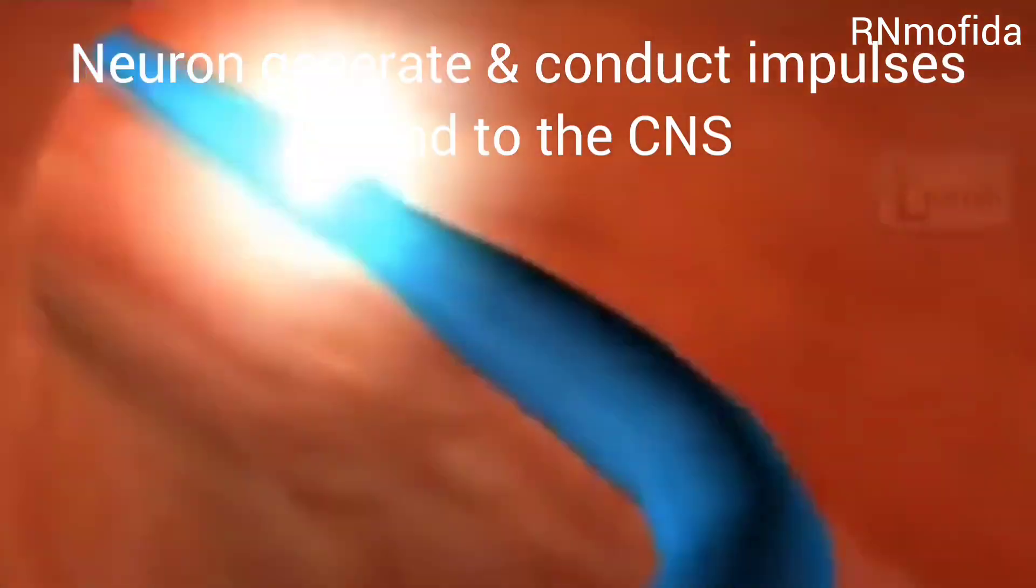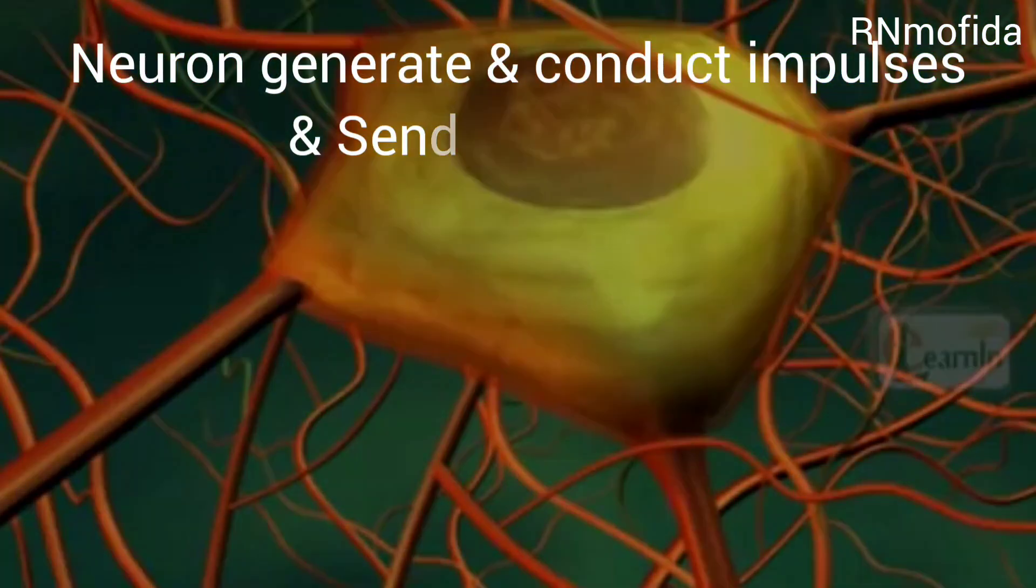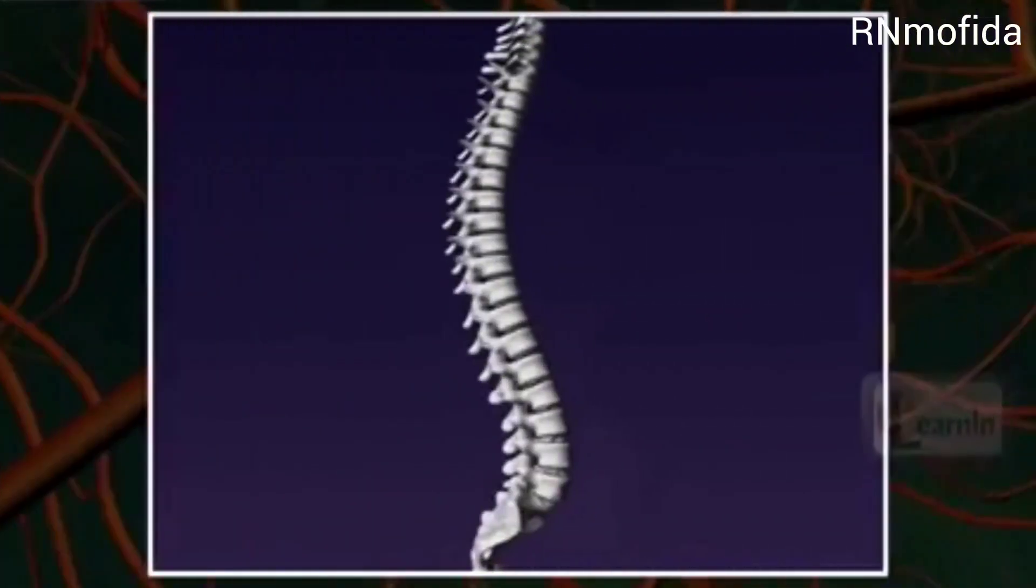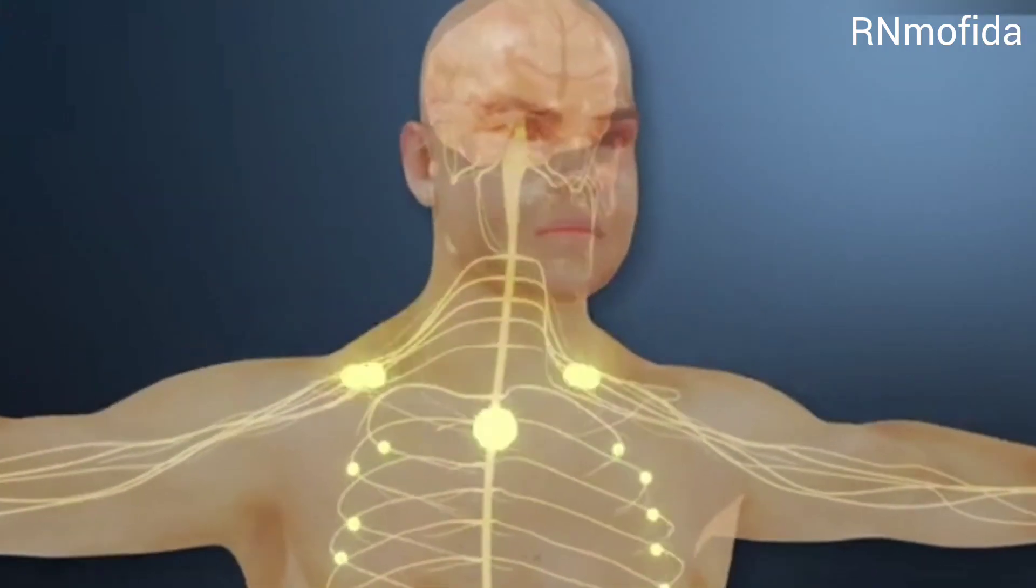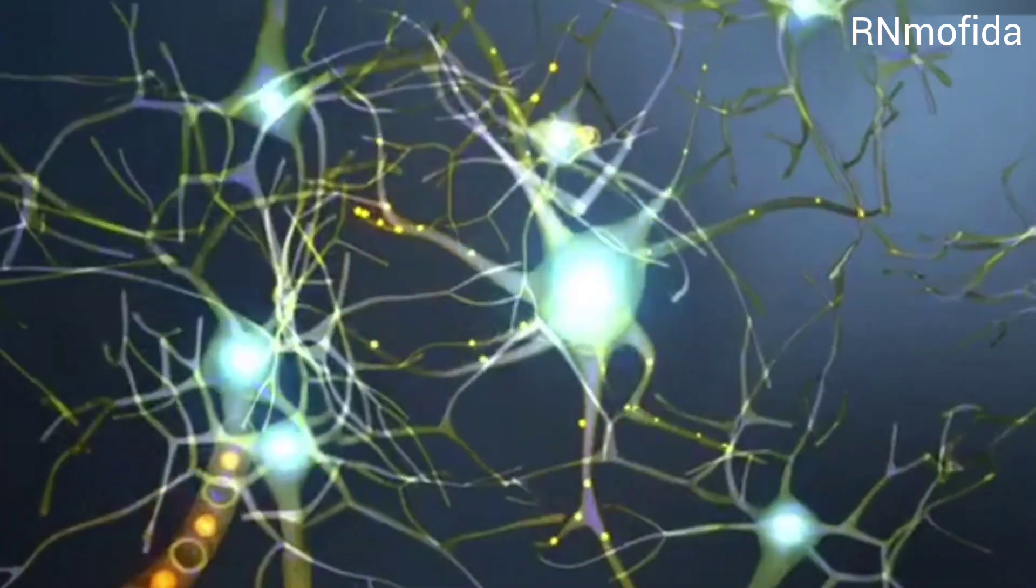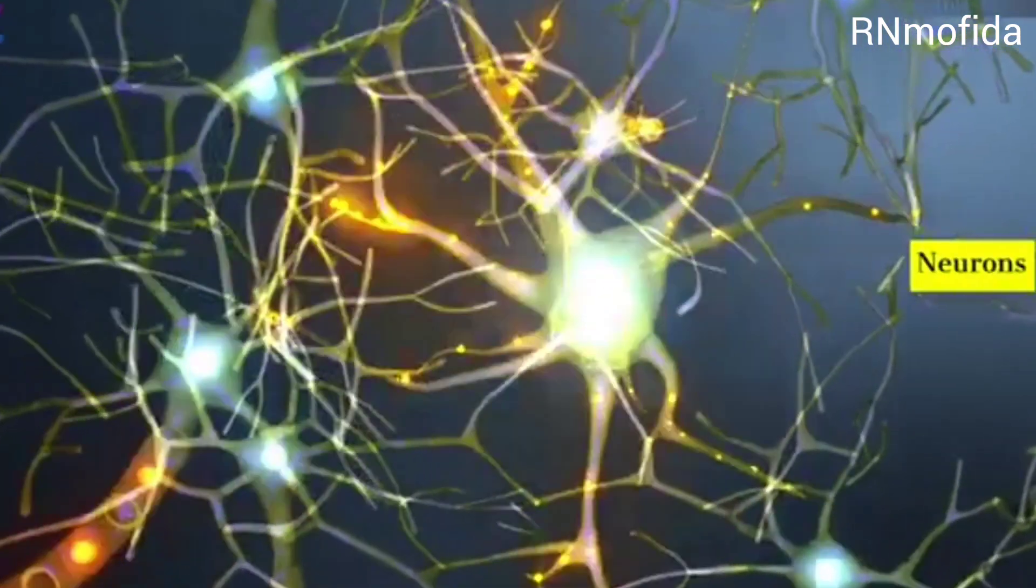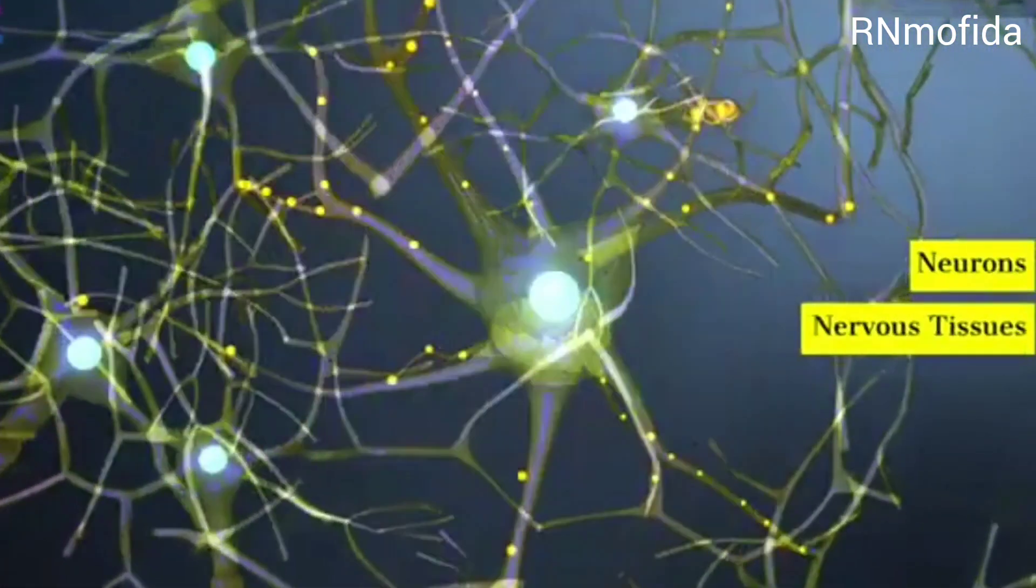Neurons are defined as the structural and functional unit of the nervous system. Neurons generate and conduct impulses and send impulses to the central nervous system. The entire nervous system is composed of specialized cells called neurons and supporting nervous tissue called neuroglia.